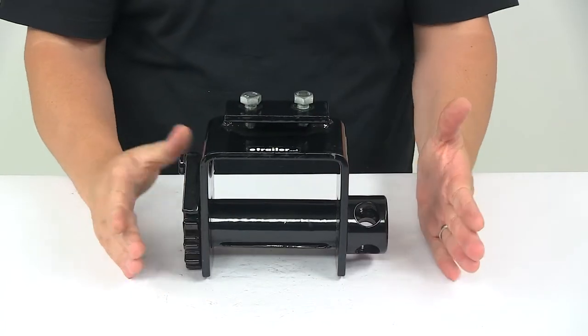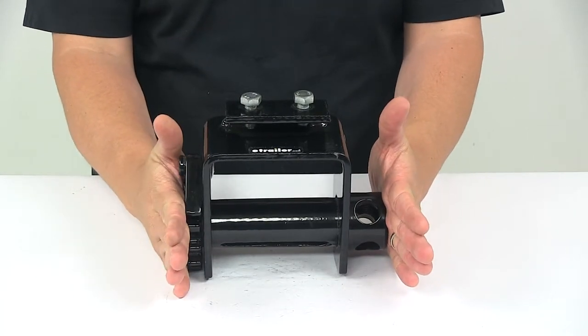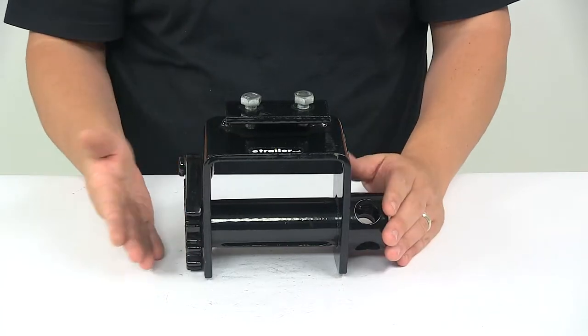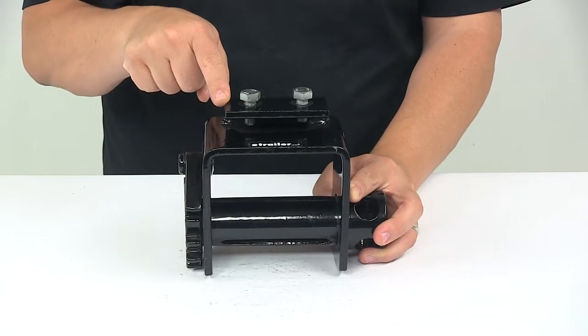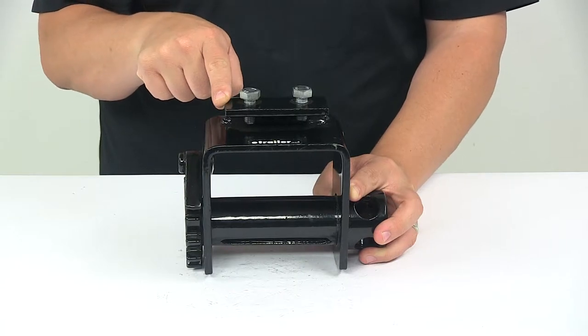Now when it comes to the overall measurements of the unit, I measured from outer edge to outer edge and got a measurement of about eight inches wide. From the very bottom of the unit to the top of the unit, this bracket right here was about six and a half inches tall.